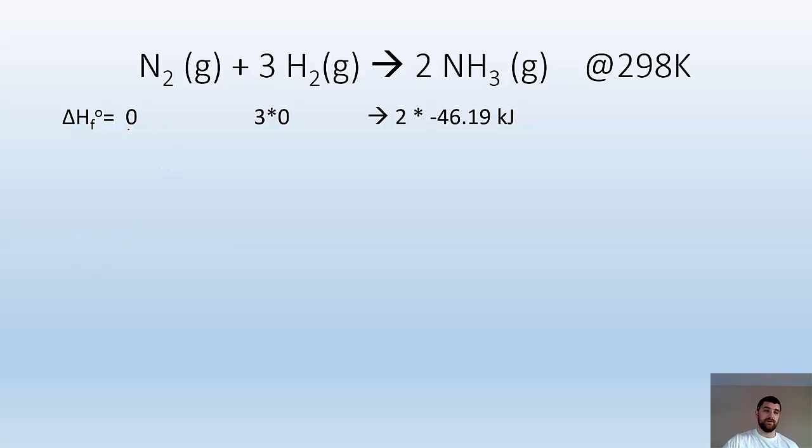You look up N2, it's zero. H2 is 3 times zero. NH3 is -46.19 kJ, times two because there are two moles of it. So ΔH° = -92.38 kJ.